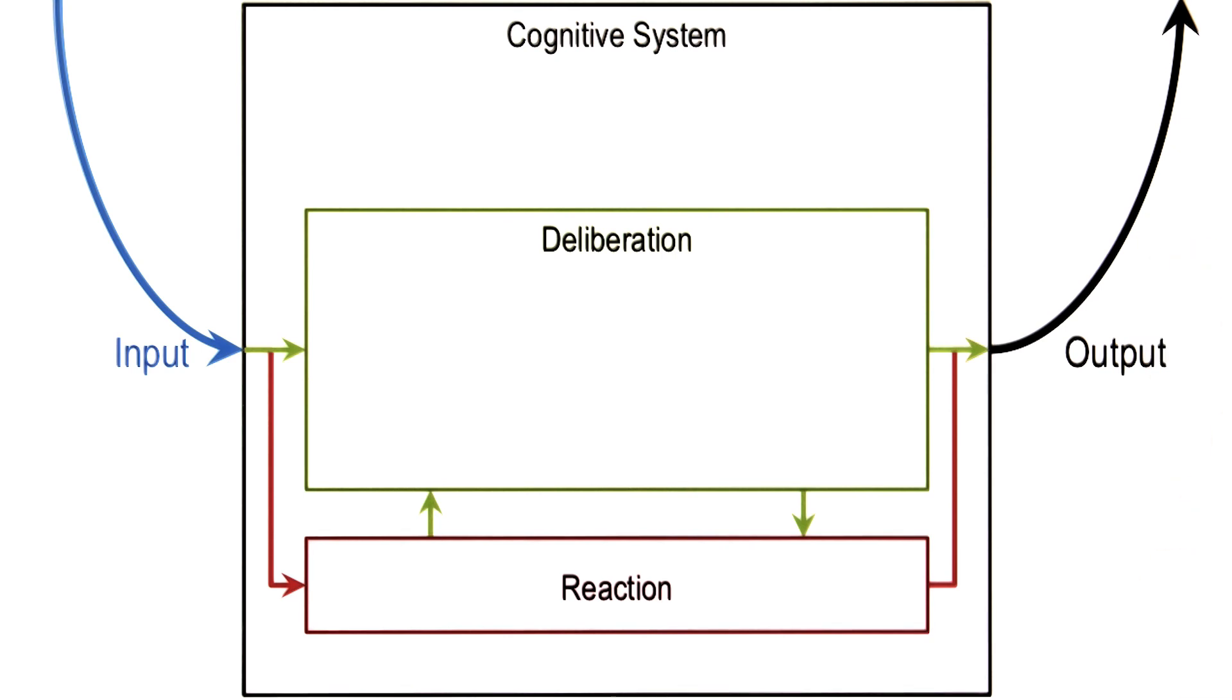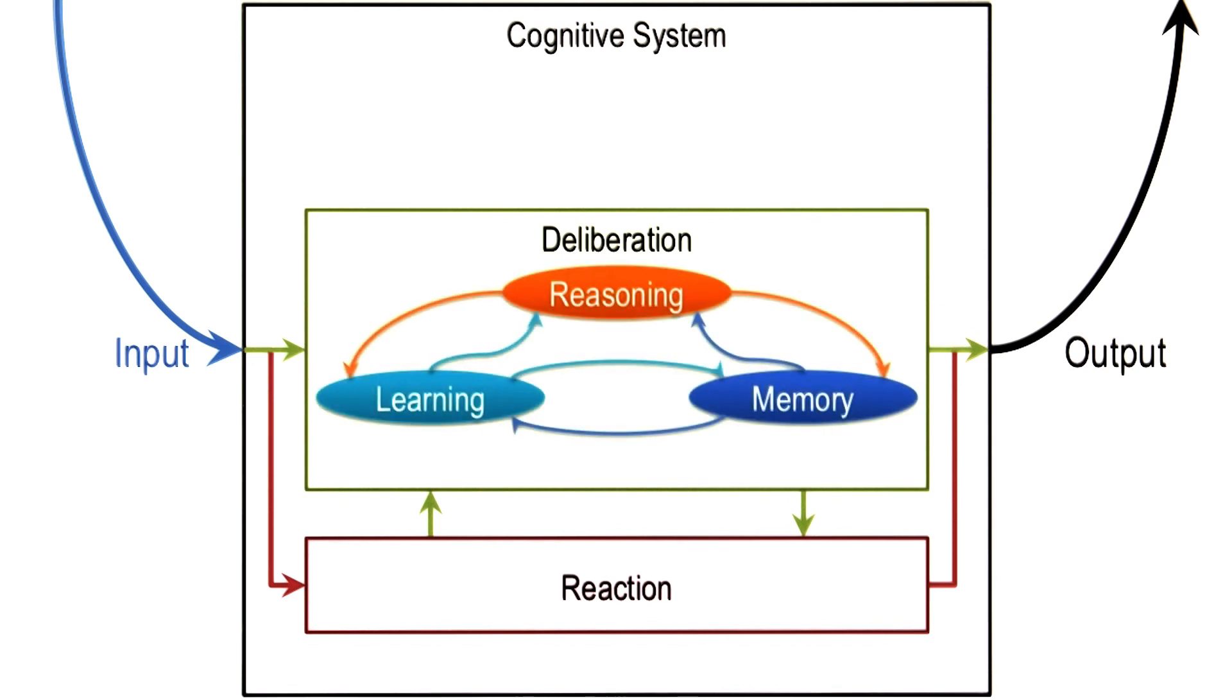This time, you may actually deliberate. You may actually look at the goal that you have, as well as the percepts of the environment, and come up with a plan that will tell you what action to take. As we discussed in the last lesson, the deliberation itself has a number of components in it. Three of the major components that we'll be studying in this class are learning, reasoning, and memory. These three components interact with each other in many interesting ways that we will decipher as we go along.